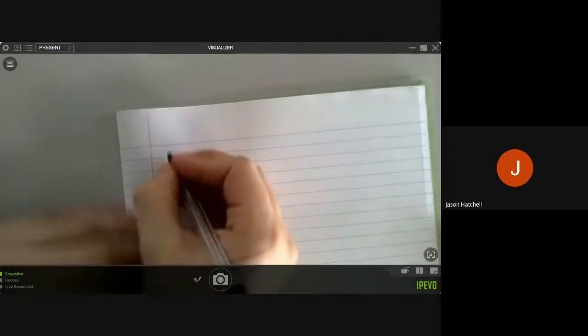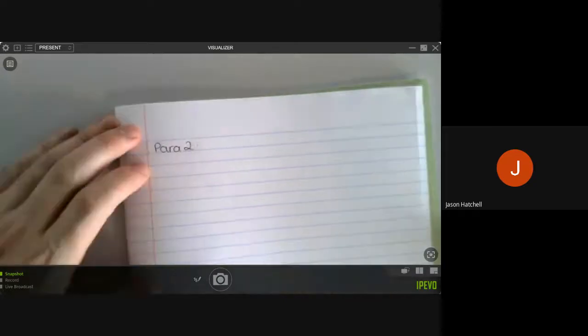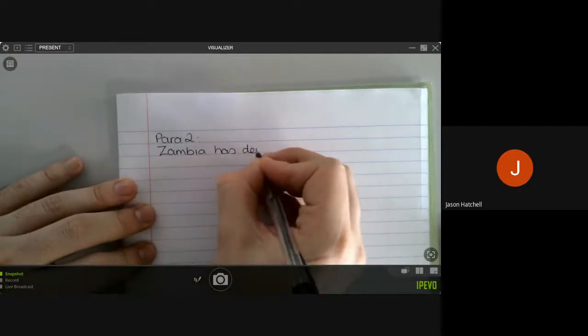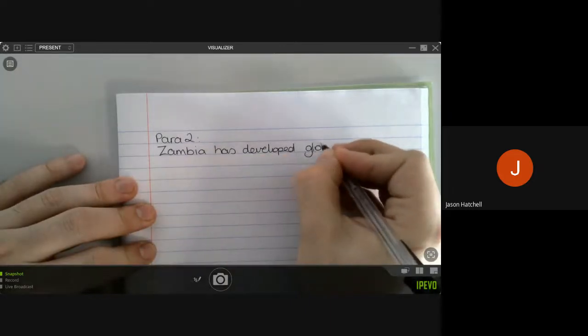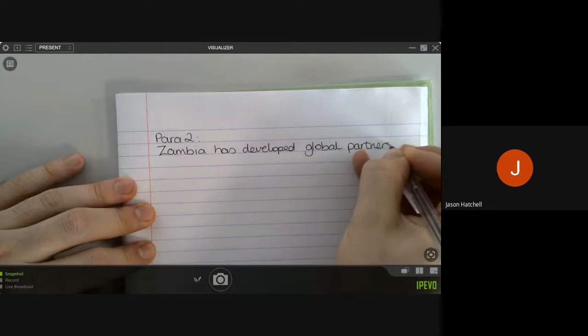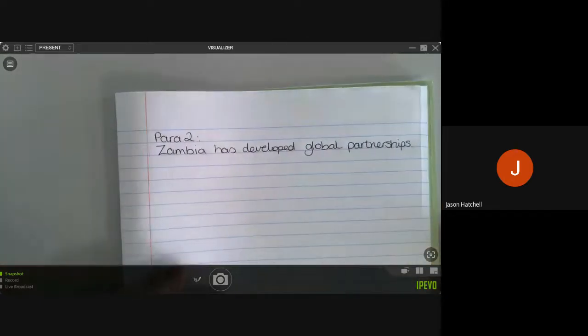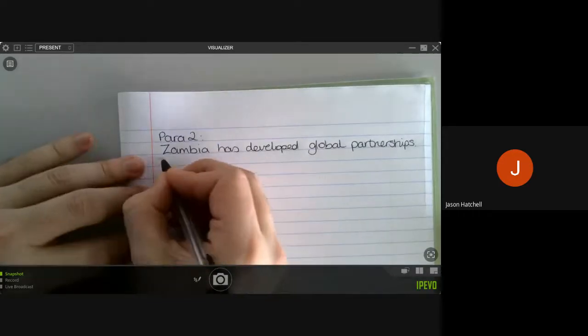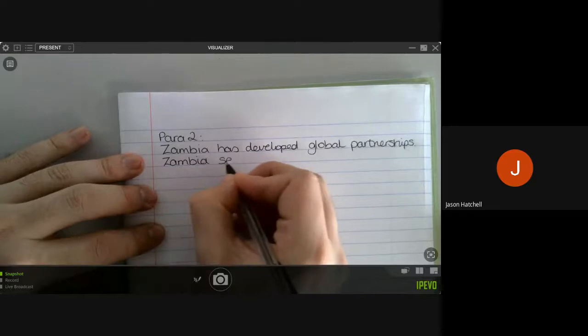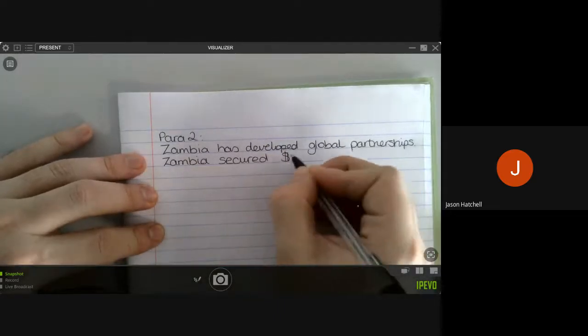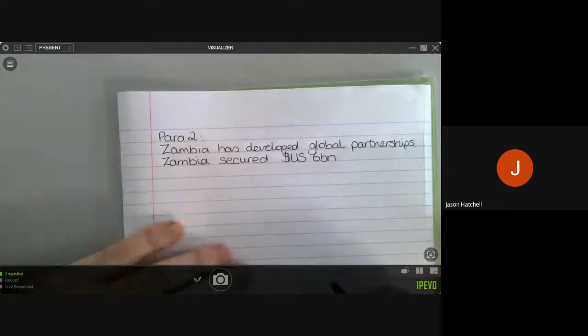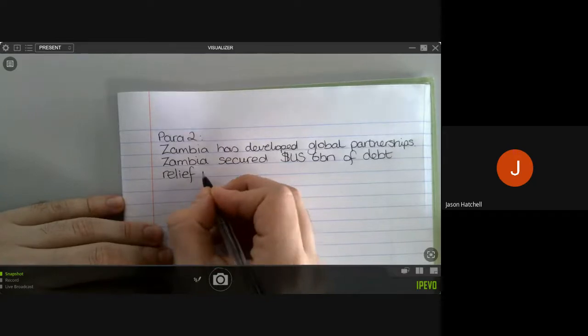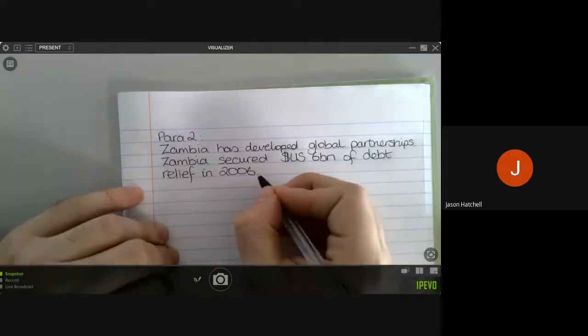So our paragraph two, we are going to say that Zambia has developed global partnerships. So that's our point. That's what we're going to argue about. We then have to give evidence or examples of those. So Zambia secured $6 billion US dollars of debt relief in 2006.